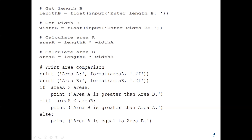Now we have the two areas. We use if-elif-else to compare. We have three options: we want to know if rectangle A's area is greater than rectangle B's area, or rectangle B's area is greater than rectangle A's, or both areas are equal. We print the area A and area B values — area A is the area for rectangle A, area B is the area for rectangle B. We use the format function to format the area results to two decimal places.